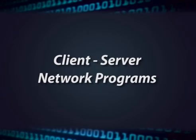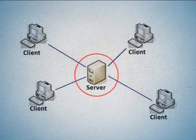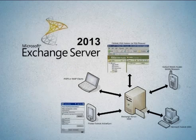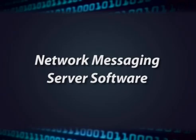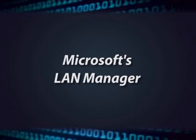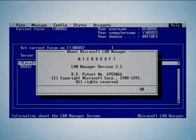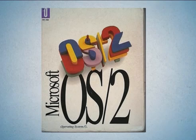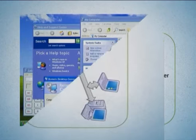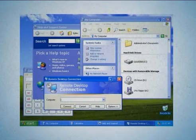Client-server network programs have a component stored on the server and a component stored on the client workstation. Microsoft Exchange is an example of this type of network program. Network messaging server software enables end-user computers to send instant messages back and forth. Microsoft's LAN Manager is a network operating system that works as a server application running under Microsoft OS/2. The file server can be used for other tasks like database services, providing a good multitasking function.